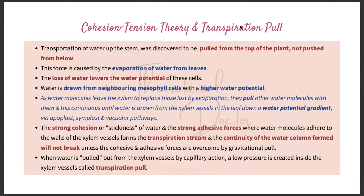Water is drawn from neighboring mesophyll cells with a higher water potential. As water molecules leave the xylem to replace those lost by evaporation, they pull other water molecules with them, and this continues until water is drawn from the xylem vessels in the leaf down a water potential gradient — through the apoplast, symplast, and vacuolar pathways. Check out my previous video on these three different pathways for more detail.